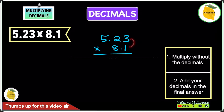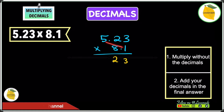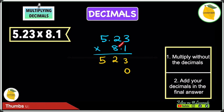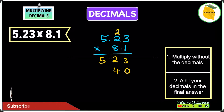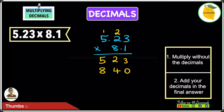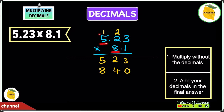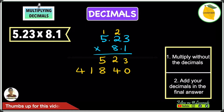3 times 1 is 3. Then 2 times 1 is 2. And 5 times 1 is 5. Add a 0 and start multiplying again. 3 times 8 is 24 — write the 4 and take the 2 as a carry. 2 times 8 is 16, plus the carry of 2 gives 18 — write the 8 and take the 1 as a carry. Then 5 times 8 is 40, plus 1 is 41 — write 41.